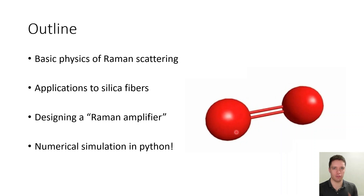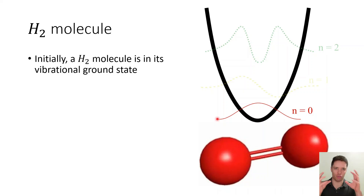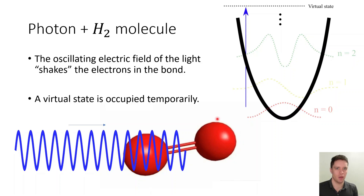Let's take a look at the simple H2 molecule, which has two atoms connected with an electronic bond. We're going to assume it's initially in its vibrational ground state, and then we're going to expose it to an oscillating electric field — that is to say, a photon with a certain carrier frequency. This will cause the combination of the field and the molecule to enter a virtual state, which eventually will decay into some other configuration.